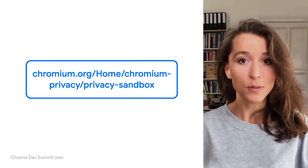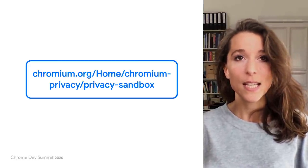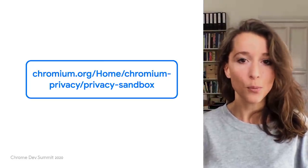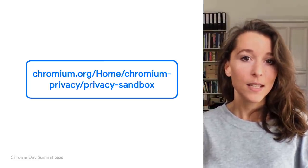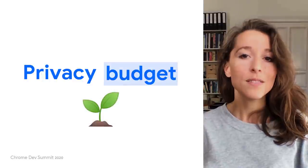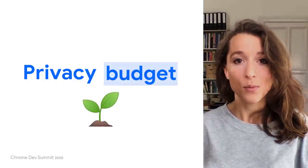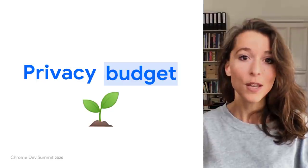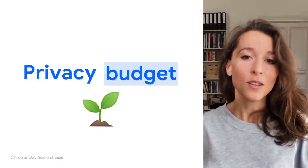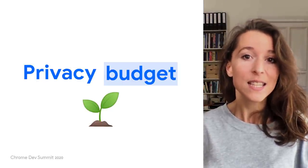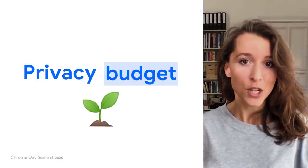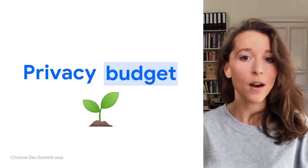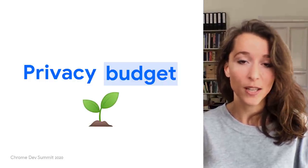You can check the list on chromium.org. And all of the privacy sandbox proposals are discussed in the open on GitHub. Now, we believe that the privacy budget is how we can prevent browser fingerprinting while keeping the web powerful. But we're early — we're in a research phase. And in this talk, I'll be sharing with you how we're trying to answer some hard questions about how the privacy budget could work.